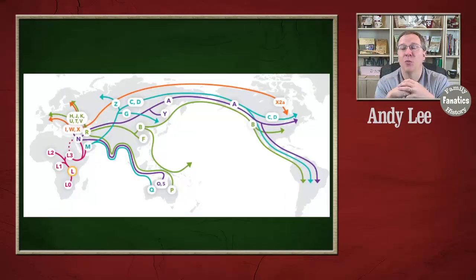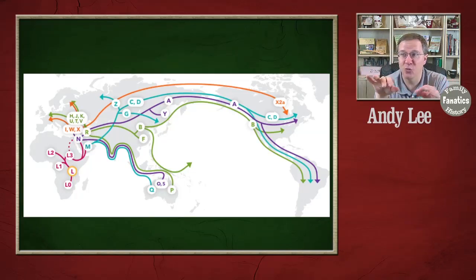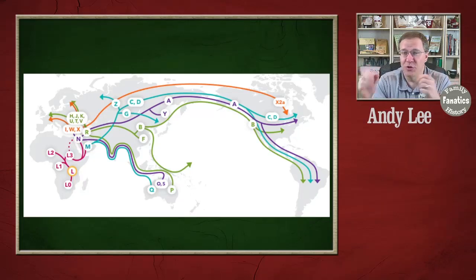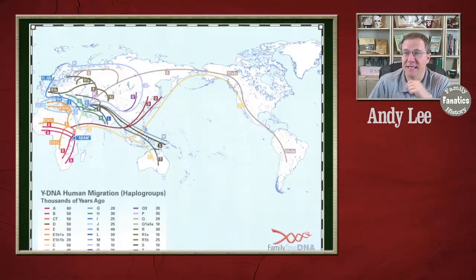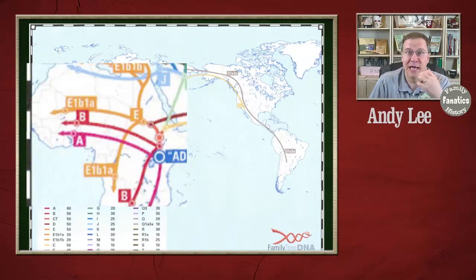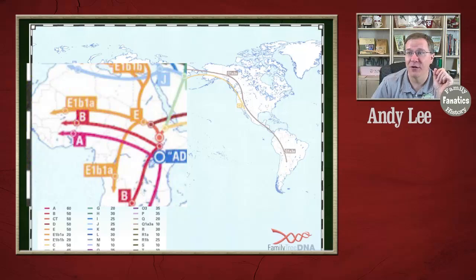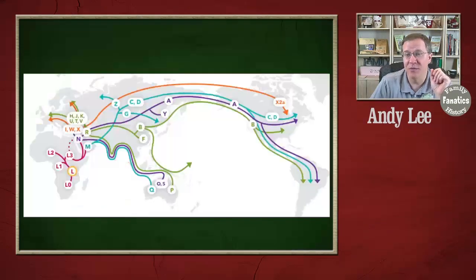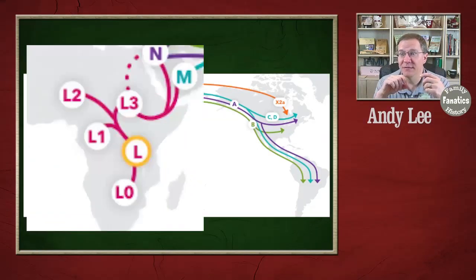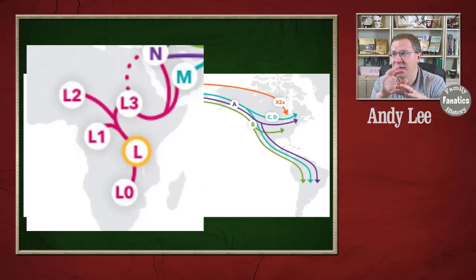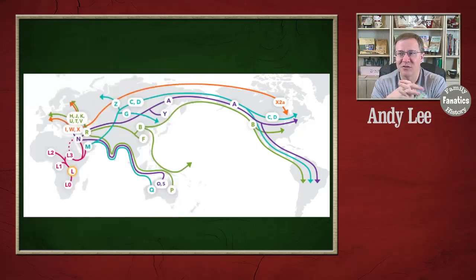There's also a map for mitochondrial DNA, and it starts in Africa as well and then spreads out. One of the things you notice between these two maps is that in the Y-DNA map, the map starts with the letter A and branches off into the other letters, while with the mitochondrial DNA map, the map starts with the letter L, and A doesn't appear until much later.